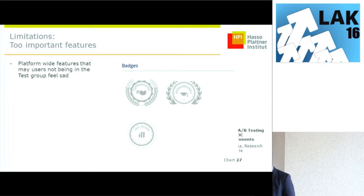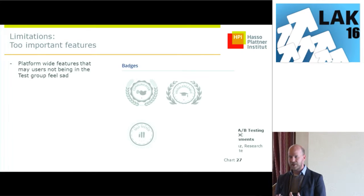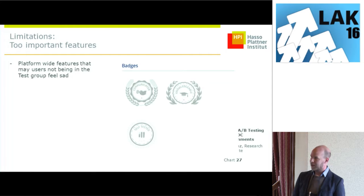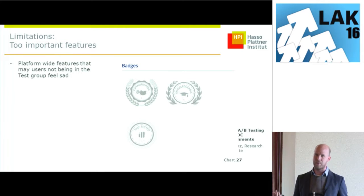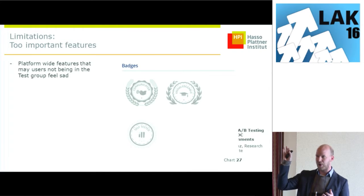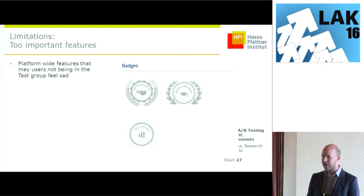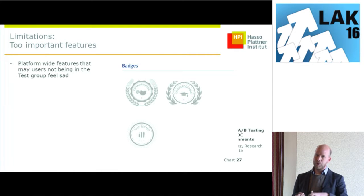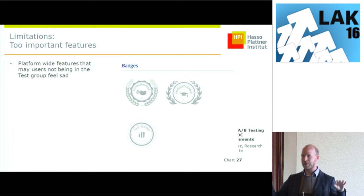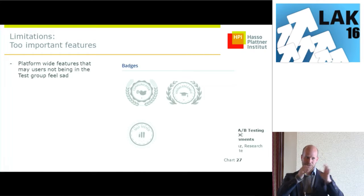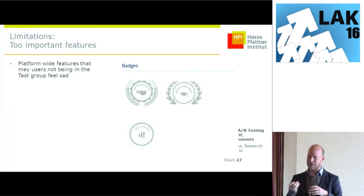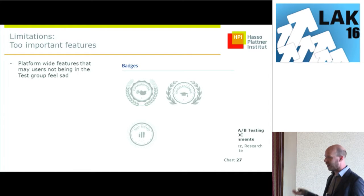Also, for some features which are just too big, we were afraid to use A-B testing. For example, the platform-wide gamification — badges — which is platform-wide, not course-wide, and has a huge impact. You'd see experience points in the header and get messages when a badge is granted. In MOOCs there's a lot of social communication between participants, and we were afraid that rolling out this cool feature that many users might like could make other users feel disadvantaged by not having it. So we decided to just not roll it out in an A-B test.